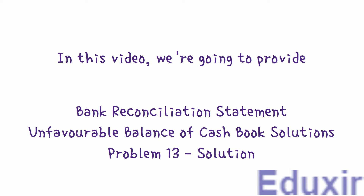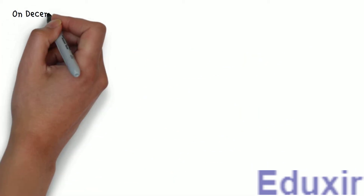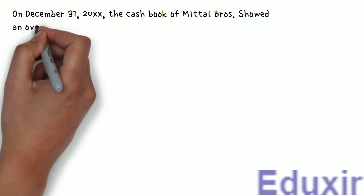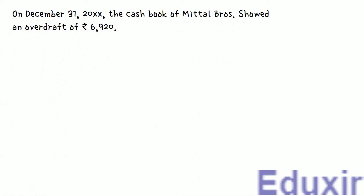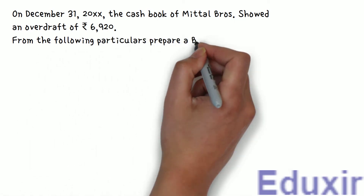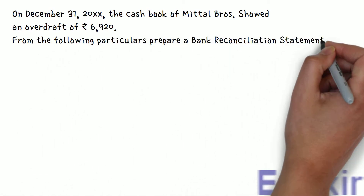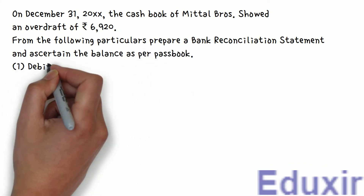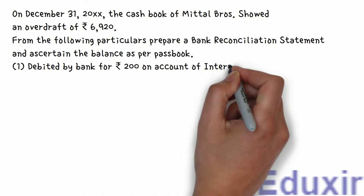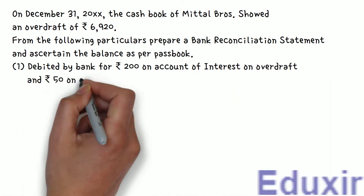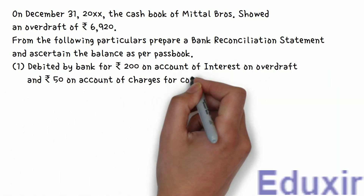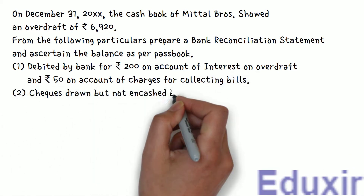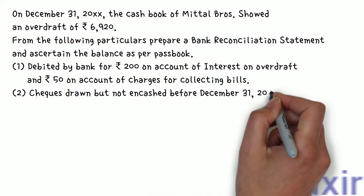The problem statement is as follows: On December 31, 2000+, the cashbook of Mittal Brothers showed an overdraft of 6,920 rupees. From the following particulars, prepare a bank reconciliation statement and ascertain the balance as per the passbook. Particulars: 1. Debited by bank for 200 rupees on account of interest on overdraft and 50 rupees on account of charges for collecting bills. 2. Checks drawn but not in cash before December 31, 2000+, for 4,000 rupees.